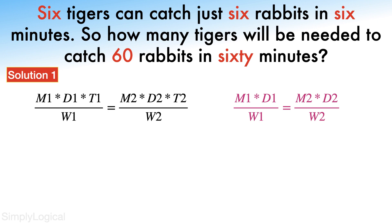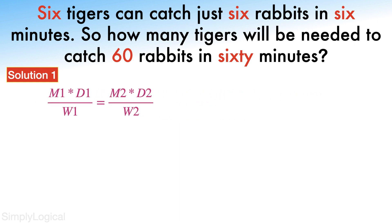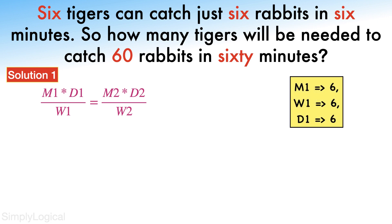Here catching rabbit is considered as work done by tiger. So M1 equals 6, D1 equals 6, and W1 equals 6.